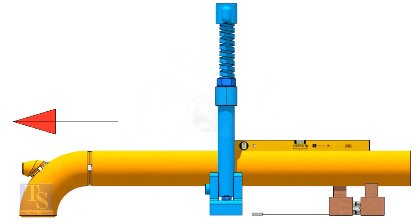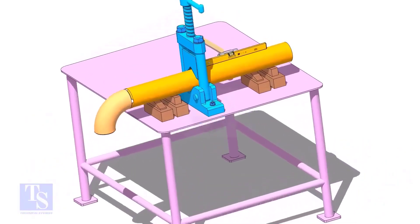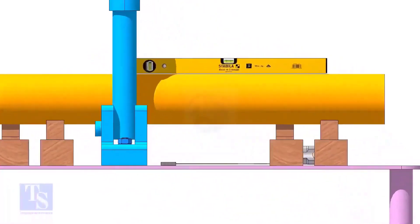I had seen guys making mistakes when they fix the direction of the elbow. Please be careful. Level the pipe and the elbow face. If necessary, put packings below the pipe.